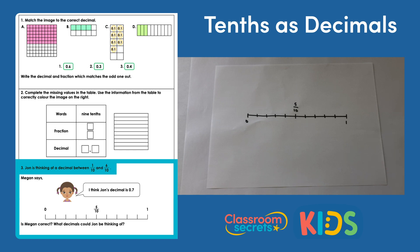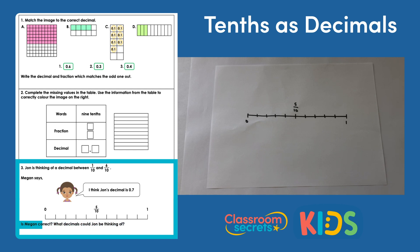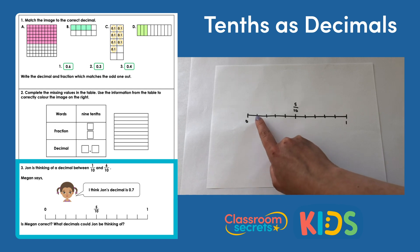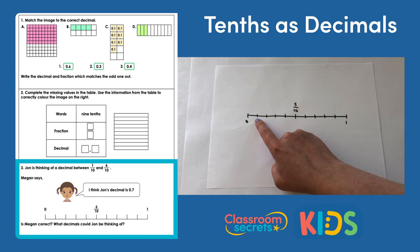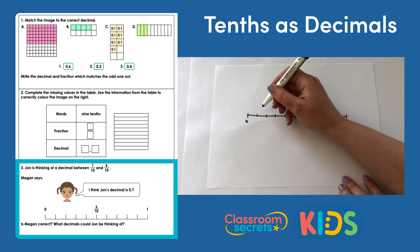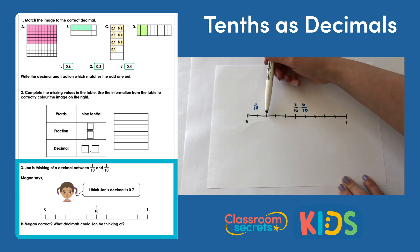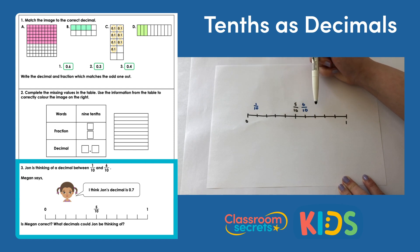Question three: John is thinking of a decimal between one tenth and six tenths. Megan says she thinks John's decimal is 0.7. Is Megan correct? We have a number line starting at zero going up to one whole, with five tenths in the middle, so each marker represents an extra tenth. My first job is to label one tenth and six tenths on my number line — one tenth would go here and six tenths would go here. The decimals lie on the values in between, but we need to convert each fraction into a decimal to check.